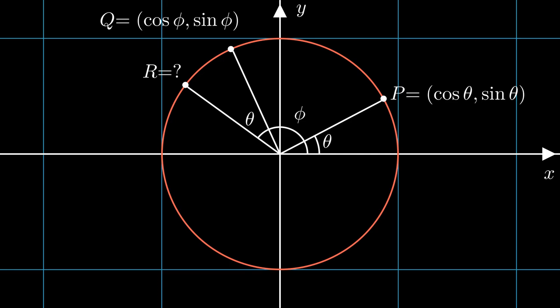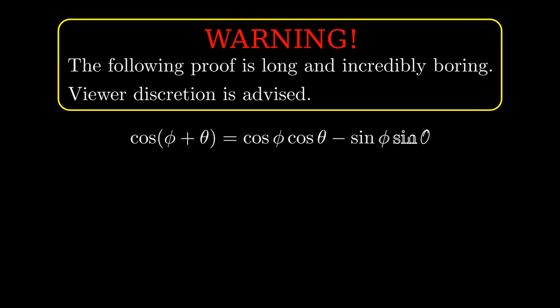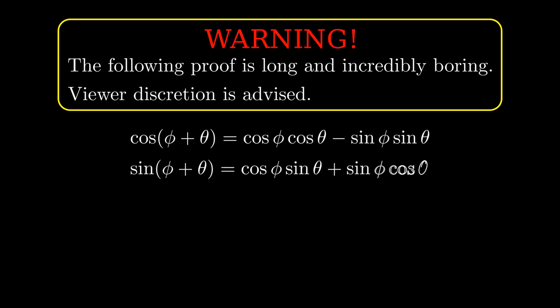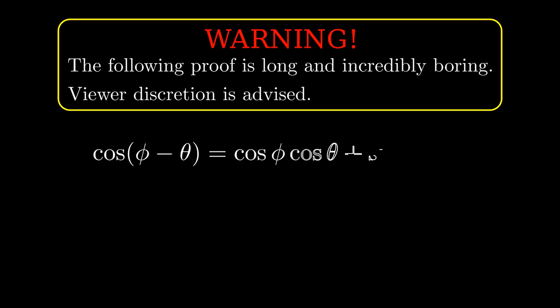And now to the ugly proof that I promised earlier. We're going to prove that the cosine and sine of phi plus theta are given by the following two formulas. Firstly, the cosine of phi plus theta is equal to the cosine of phi times the cosine of theta minus the sine of phi times the sine of theta. And secondly, the sine of phi plus theta is equal to the cosine of phi times the sine of theta plus the sine of phi times the cosine of theta. To do this, we begin by proving that the cosine of phi minus theta is equal to cosine of phi times the cosine of theta plus the sine of phi times the sine of theta. And if you wonder if there's a typo here, don't worry, everything is going exactly according to plan.